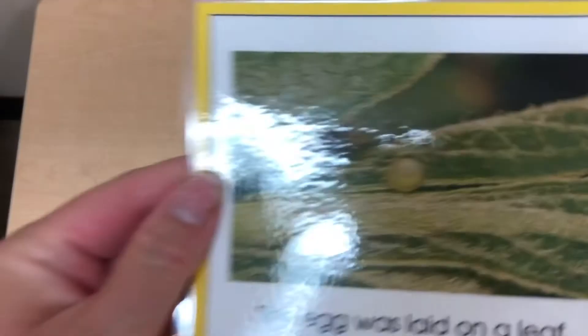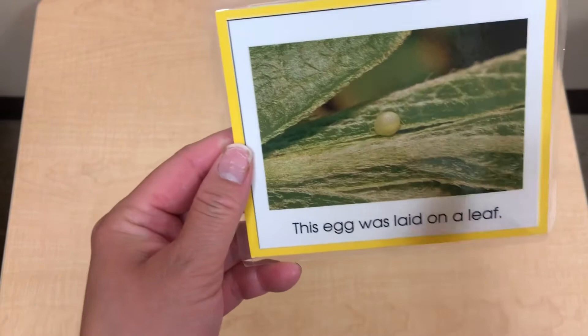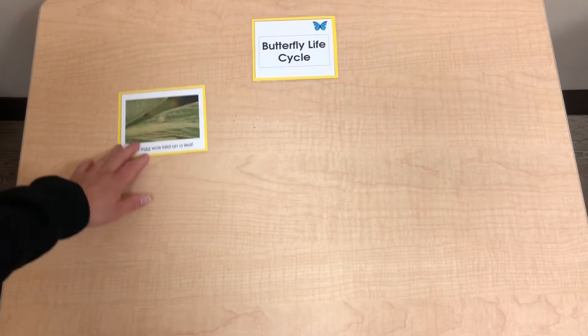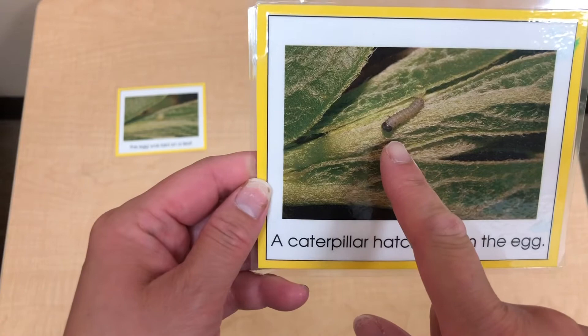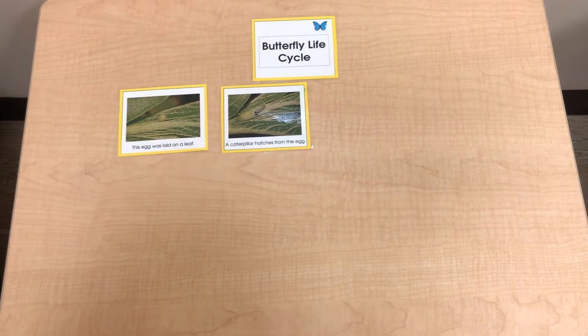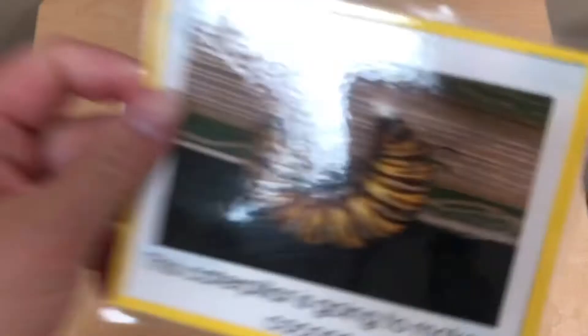Butterfly life cycle. This egg was laid on a leaf. A caterpillar hatches from the egg. Caterpillars eat leaves to grow — it's getting bigger and bigger. The caterpillar is going to make a cocoon or chrysalis. The cocoon is finished.